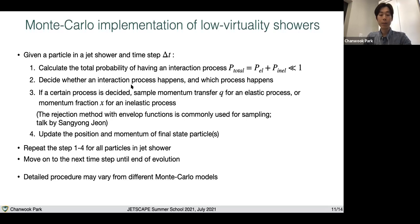Now using a random number between zero and one, you decide whether an interaction process happens and which process happens. If it turns out that nothing happens, then you move on to the next particle in the list. If you decide a certain process happens, then what you need to do is sample the kinematics of final state particles. For example, you need to sample the momentum transfer Q for elastic process, or momentum fraction x for the inelastic process.